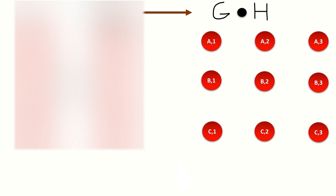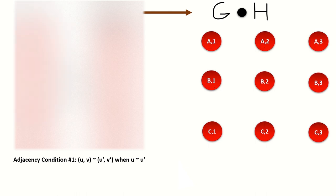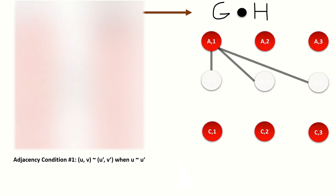Let's work through three examples together. What is the lexicographic product of these two graphs? First, find the vertex set, which is the cartesian product of the vertex sets of g and h. Since this is our first example, let's determine the adjacencies one vertex at a time. According to the first adjacency condition, two vertices in the lexicographic product are connected if their left entries are adjacent in the left graph, graph g. For vertex a1, since vertex a is adjacent to vertex b in graph g, vertex a1 will connect to all vertices whose left entry is b.